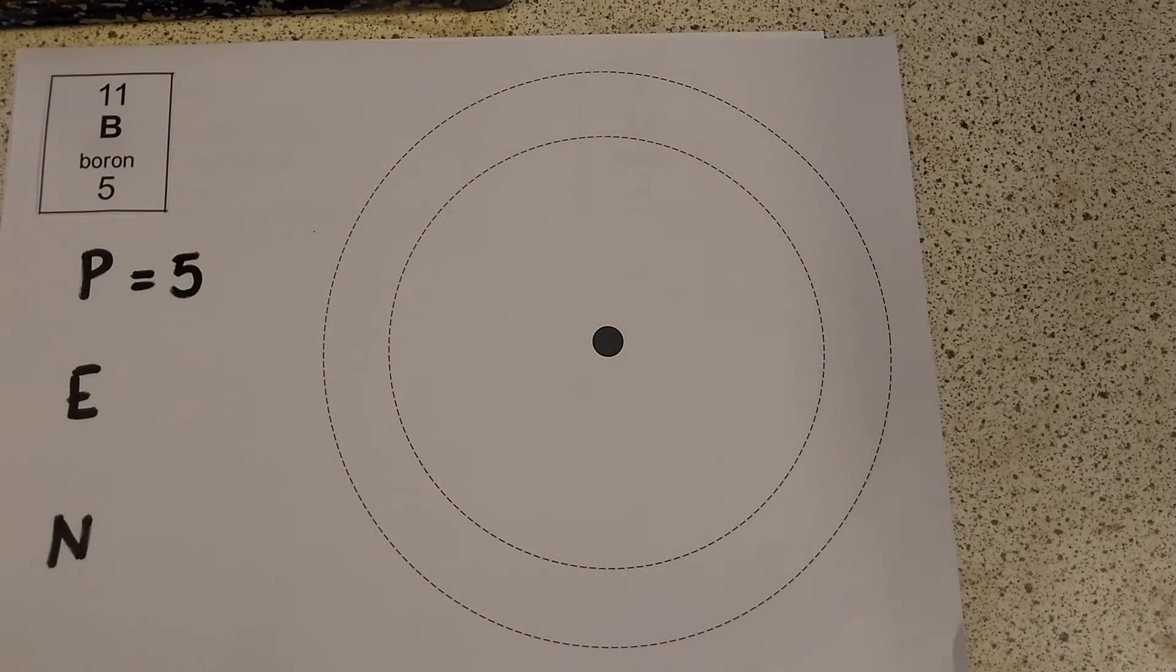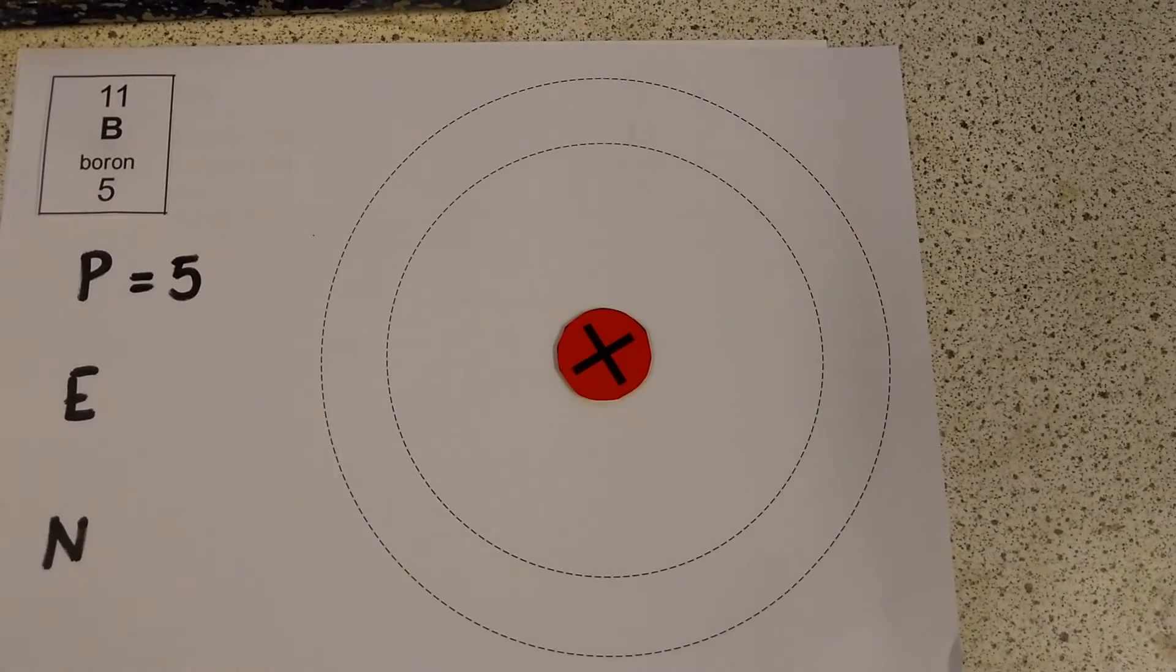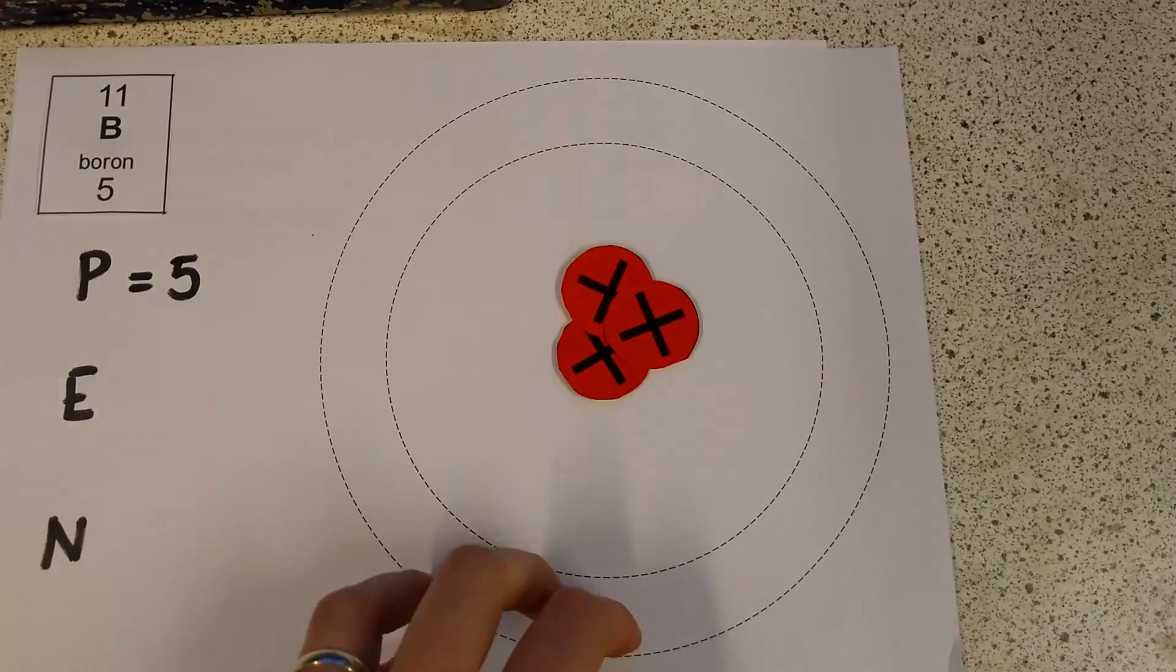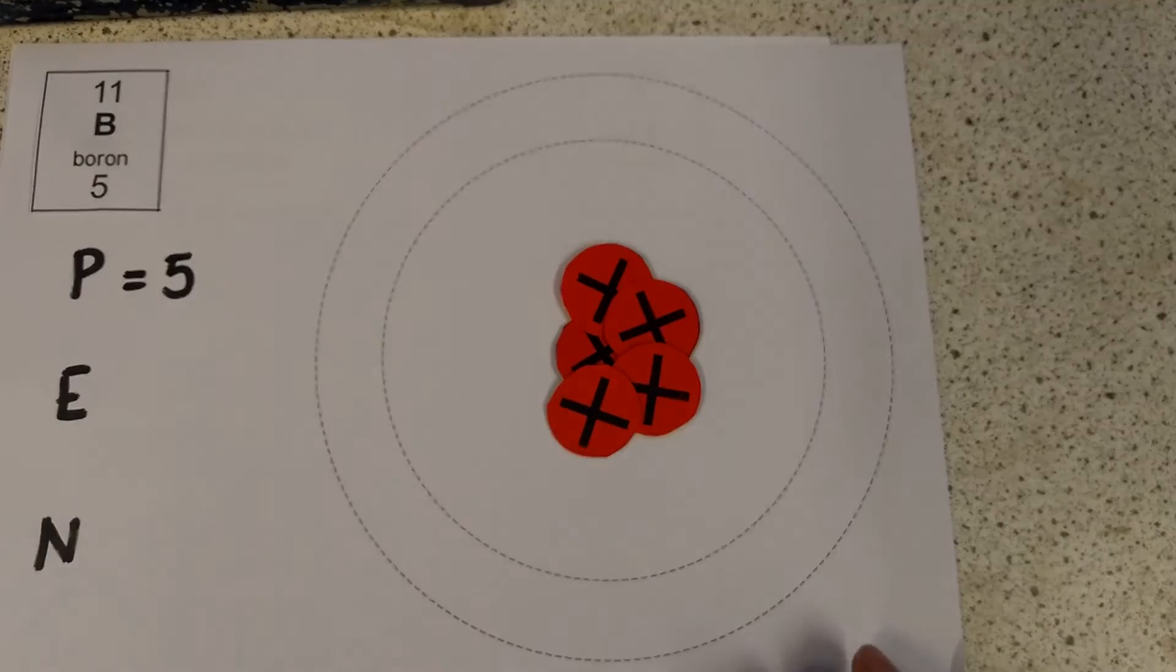So we're going to put those 5 protons right in the nucleus where we put them before. It's going to get a little bit crowded in here, and maybe I'm going to wish I'd made it a bit bigger, but there we go. OK, 5 protons in there.